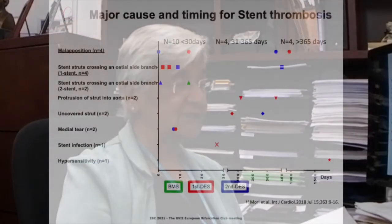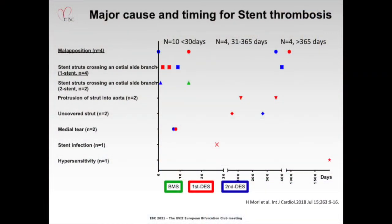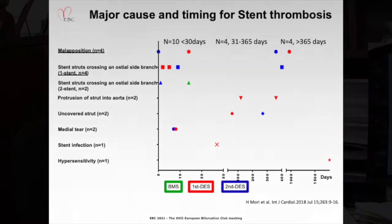Here we show the major causes and timing of stent thrombosis. In the early time point — less than 30 days — there were 10 cases, and in the later time points, 31 to 365 days and greater than 365 days, there were four cases each. The main causes of thrombosis were malapposition, struts crossing side branches with protrusion into the lumen, uncovered struts, and hypersensitivity.